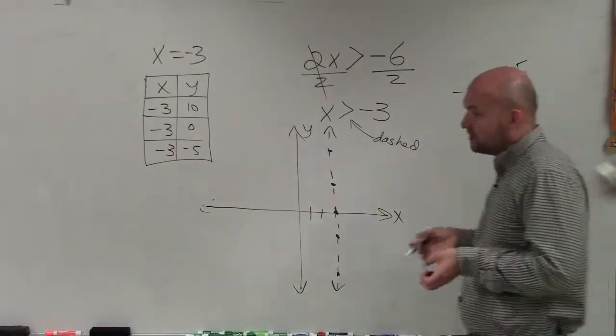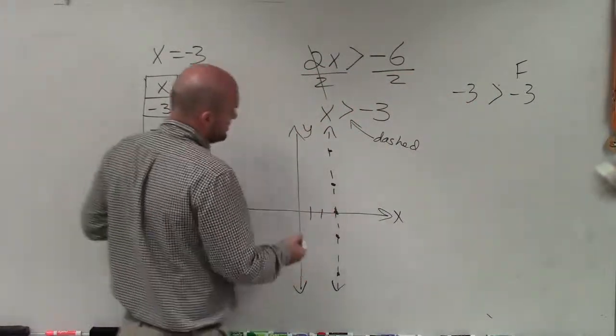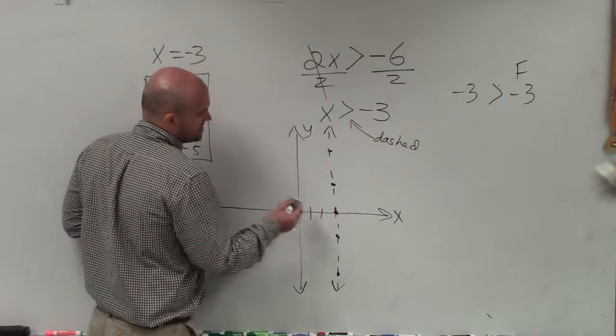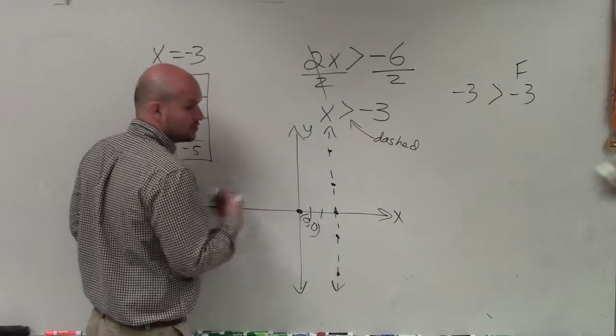Now we want to determine, what about the shading? Where are we going to shade for this point? Are we going to shade points to the left or to the right? So to do that, we need to choose another point that does not lie on the line. And the best point to always pick is 0, 0, unless the 0, 0 goes through the line.